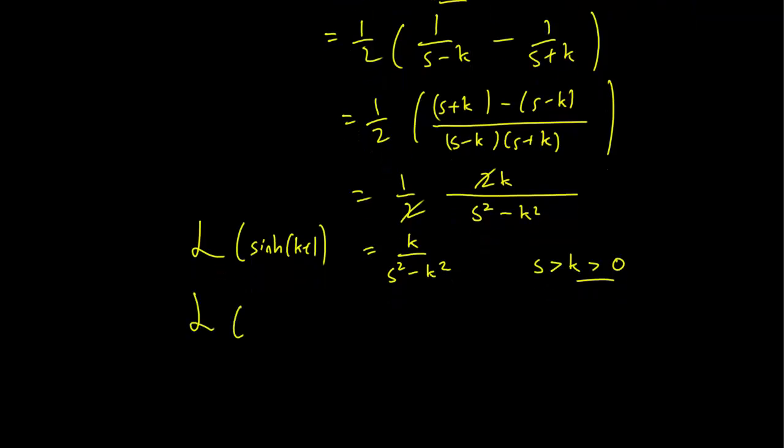The Laplace transform for cosh, again, this is worked out in the book in almost exactly the same way. It's instead going to be s over s squared minus k squared.